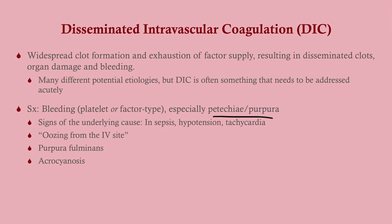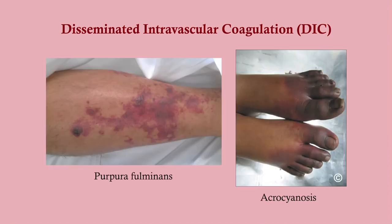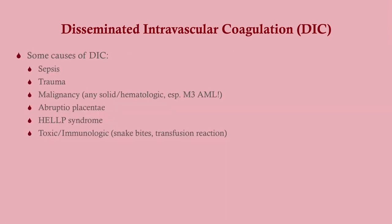Signs of the underlying cause may also be present — for example, if it's a septic patient, you'll see hypotension, tachycardia, pallor, and so forth. Oozing from the IV site is a very commonly tested vignette detail — remember that. Purpura fulminans and acrocyanosis are also classic findings in DIC.